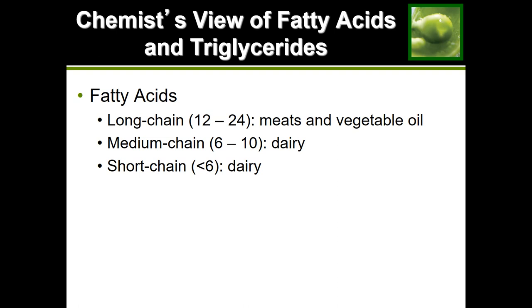If there are fewer than six carbons strung together, this is called a short-chain fatty acid. Between six to ten carbons we call medium-chain, and fatty acids that have a chain of 12 to 24 carbons we call long-chain fatty acids — and those are actually the most common.